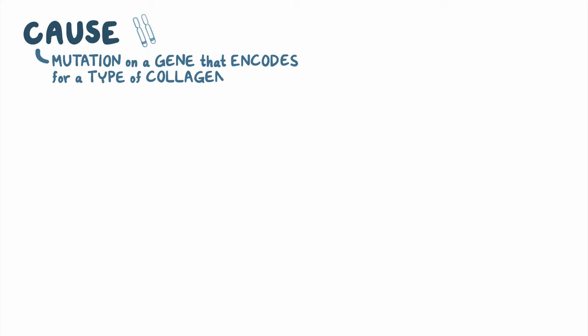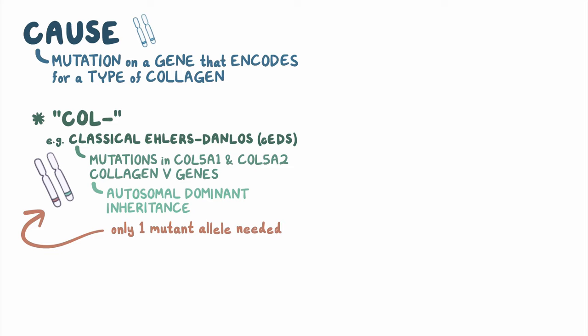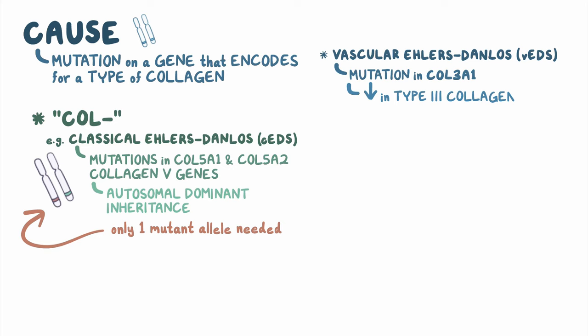The cause of Ehlers-Danlos syndrome is typically due to a mutation on a gene that encodes for a type of collagen protein. The specific gene involved determines the type of Ehlers-Danlos syndrome. For example, classical Ehlers-Danlos syndrome, or cEDS, is caused by mutations in the COL5A1 and COL5A2 collagen 5 genes. These genes are passed through autosomal dominant inheritance, where only one mutant allele is needed for the disease. Vascular Ehlers-Danlos syndrome, or VEDS, is caused by a mutation in the COL3A1 gene, which causes a decrease in type 3 collagen synthesis, weakening blood vessels.